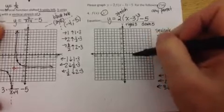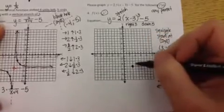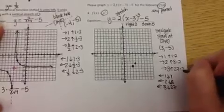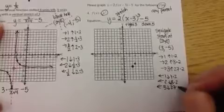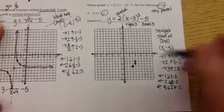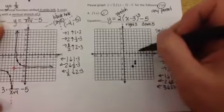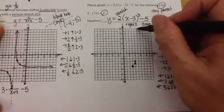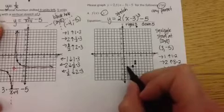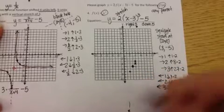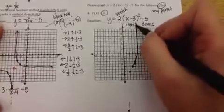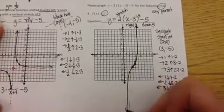Starting from (3, negative 5), I move over 1, but I need to stretch times 2, so over 1 up 2. Then over 2 up 16, and over 3 up 54 — though that's way off the graph. Going the other direction: left 1 down 2, left 2 down 16. When I connect these points, remember it makes a shape like a parabola that's been twisted in the middle — parabola up to the right and then twist around to make the other parabola going down to the left.